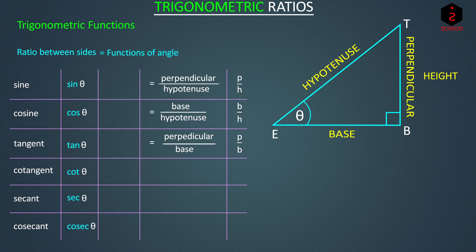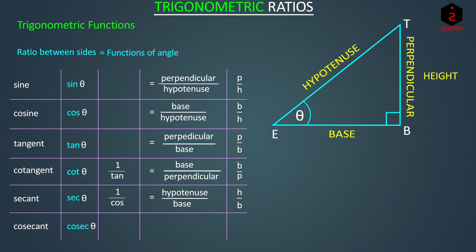The remaining three functions are simply reciprocals of these ratios. Cot is the reciprocal of tan, so cot θ = B/P. Sec is the reciprocal of cos, so sec θ = H/B. And cosec is the reciprocal of sine, so cosec θ = H/P. Therefore, sine, cos, and tan are also reciprocals of cosec, sec, and cot respectively.